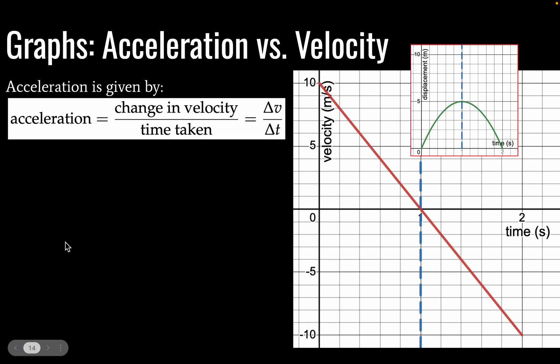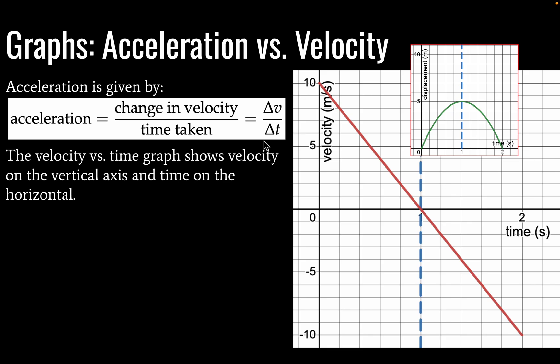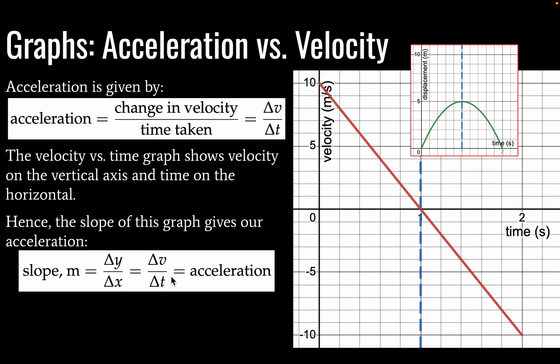Okay, next, acceleration versus velocity. Recall that acceleration is given by a change in velocity divided by time taken. Okay, so this velocity versus time graph shows velocity and time on the vertical and horizontal axes. So the slope of this graph is going to give our acceleration. Wow, that's very convenient. So slope is equal to a change in y divided by a change in x.